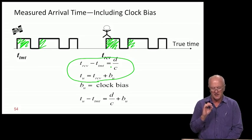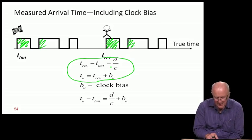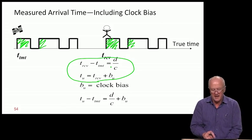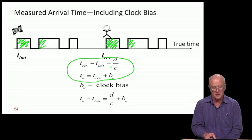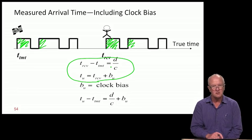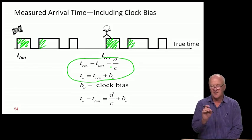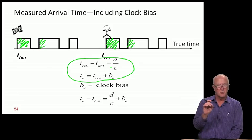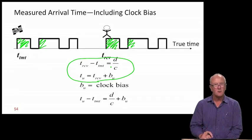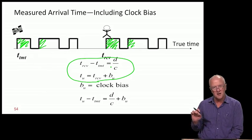But t_user isn't actually synchronized to that ideal time where we measured t_receive. There's a bias, b_u. In my example where the clock was reading 12:02 rather than 12:01, the bias is that one minute offset between the user clock and true time.